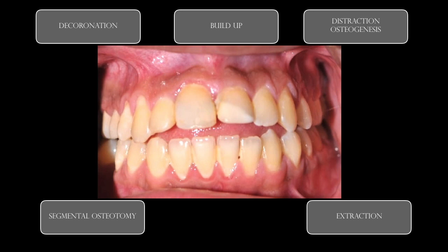Distraction osteogenesis is a complicated procedure not easily manageable in a private practice setting, so we did not pursue it. Another great option was segmental osteotomy — cutting the bone and moving the block in one piece without reflecting the palatine mucosa, which is essential for nourishment of the block, and repositioning the ankylosed tooth in the correct position. Extraction was also an option, but in this situation it would have terrible consequences for the aesthetics of soft and hard tissue, and would be very difficult to reconstruct for future implant placement.